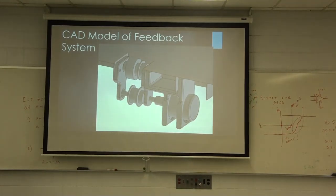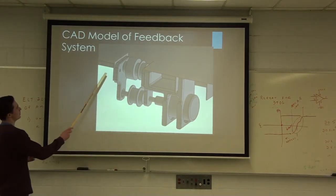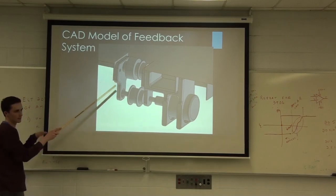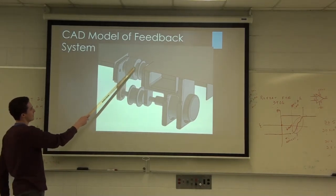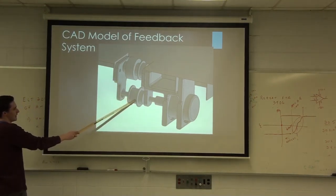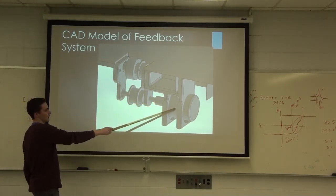Here's just a little CAD model of the system. The board moves on this surface here. This is the little wheel that the board contacts and spins. The belt goes between this pulley here and this one here. This shaft is connected through a shaft coupler to the encoder.